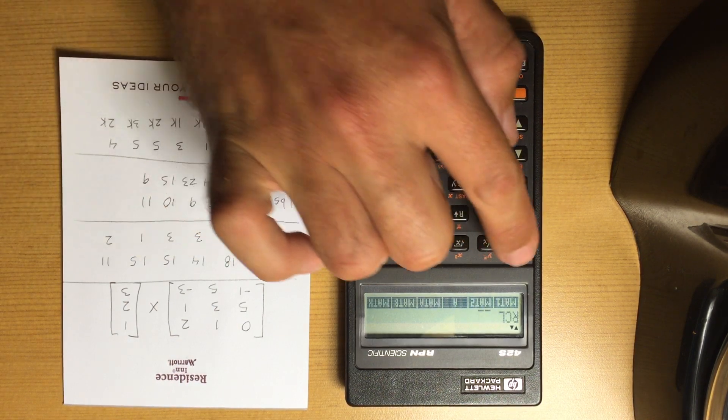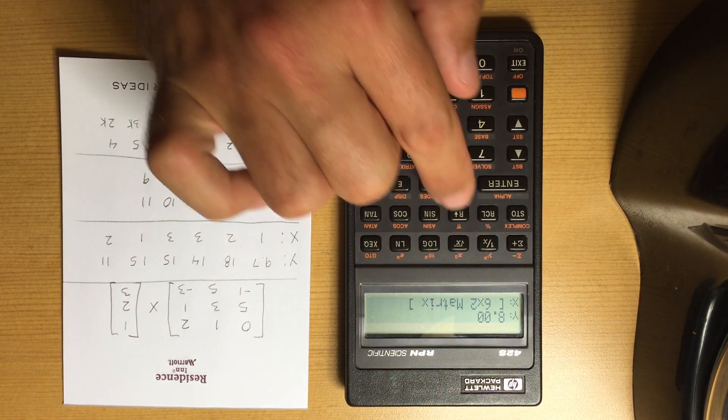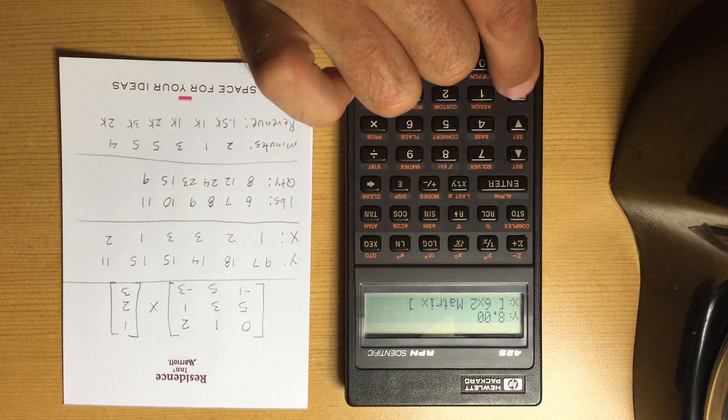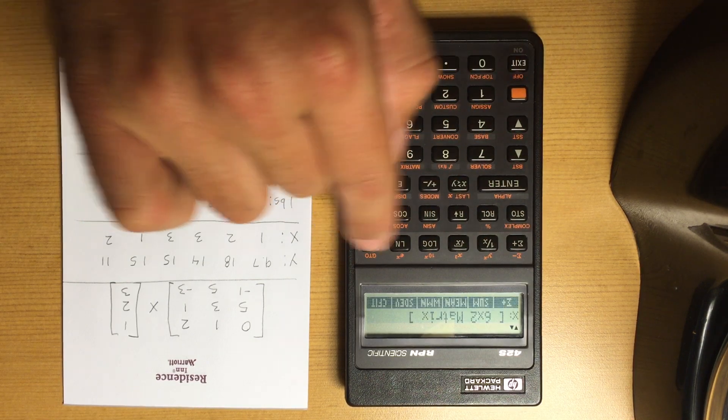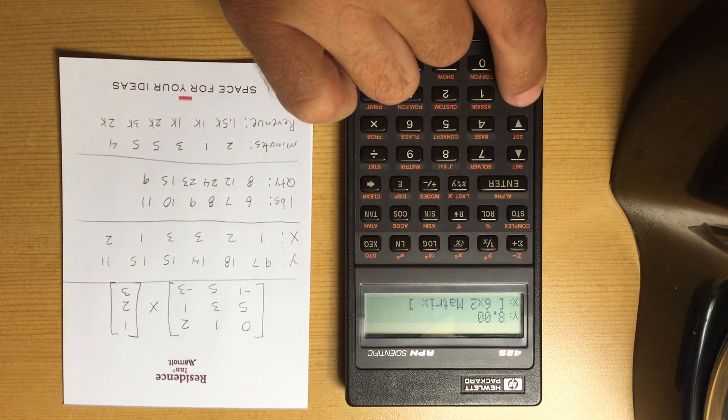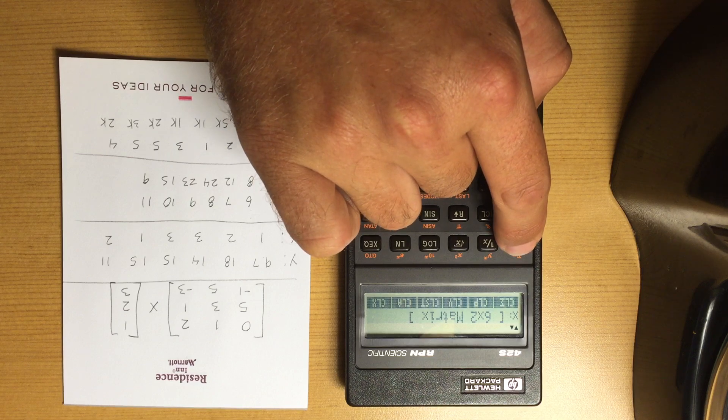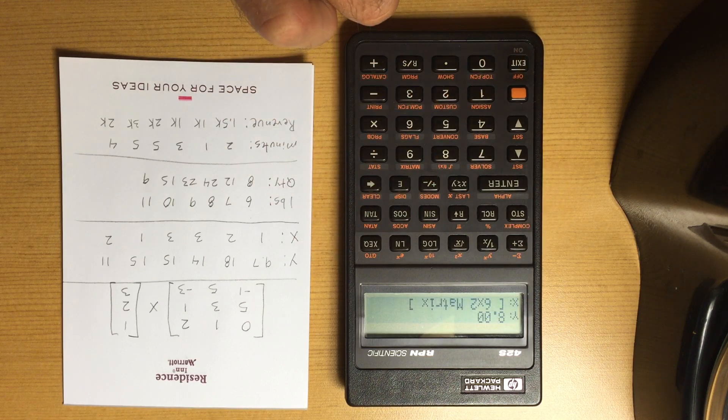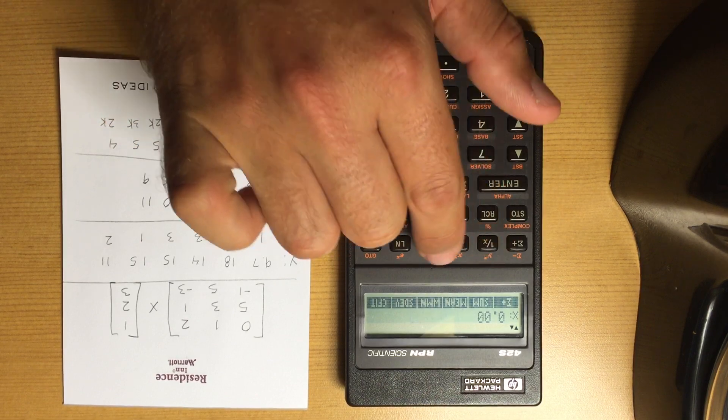So now I'm going to recall matrix 1. It's a 6 by 2 matrix. Before I do that, I should have said this at the beginning: clear your summation because right now our summation registers have stuff in it. So I cleared that.